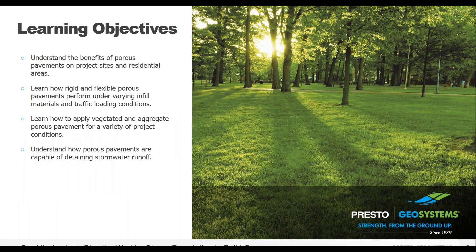Some learning objectives for today: we'll start with understanding the benefits of using a porous pavement system, and how both rigid and flexible systems can perform under varying traffic loading conditions. We'll talk about aggregate surface and vegetated or grass surface porous pavements, and why you may choose one over the other. Finally, we'll cover how porous pavements can detain stormwater runoff and help achieve green building goals. If you have questions, please enter them in your questions tab in GoToWebinar, and I'll address them at the end.